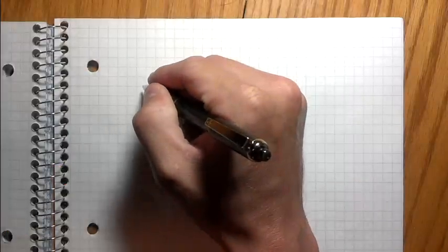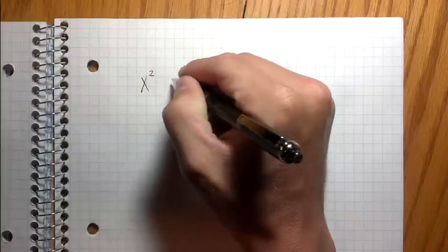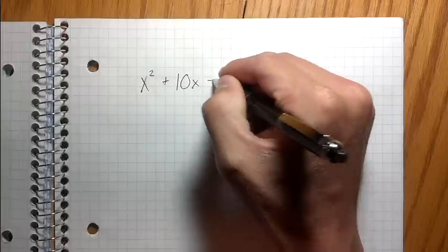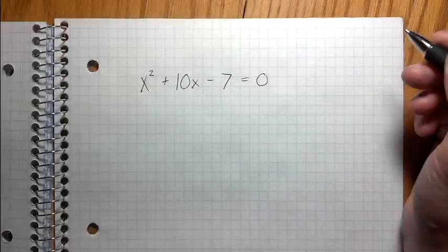So I'm gonna give an example here. Let's say that I had an equation that was like x squared plus 10x minus 7 equals 0.